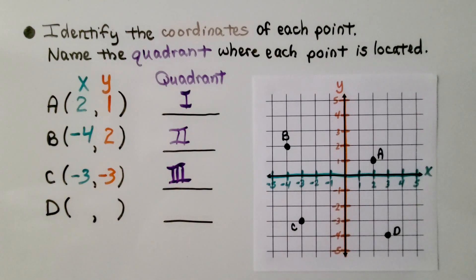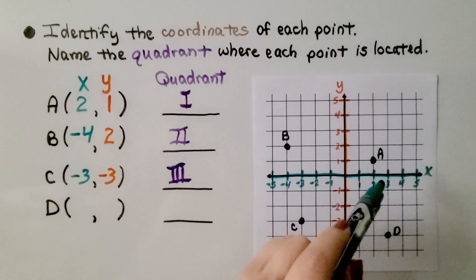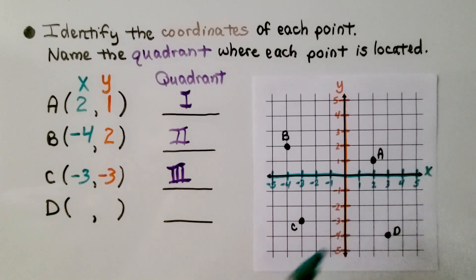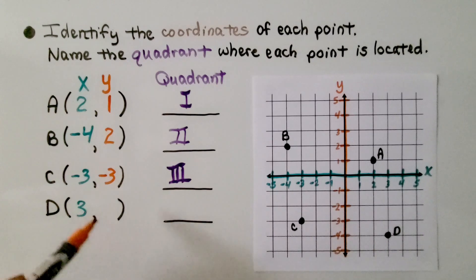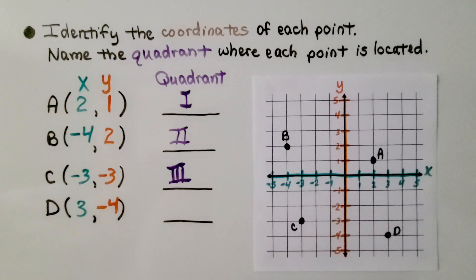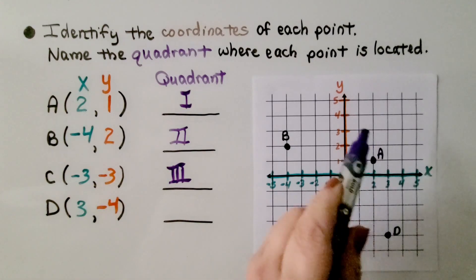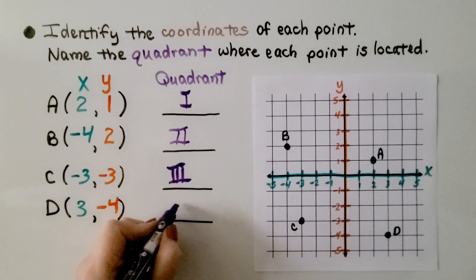And for point D, looking at where it is for x, that's a positive three. And where is it for y? Negative four. Going around the letter C — one, two, three, four — it's in the fourth quadrant.